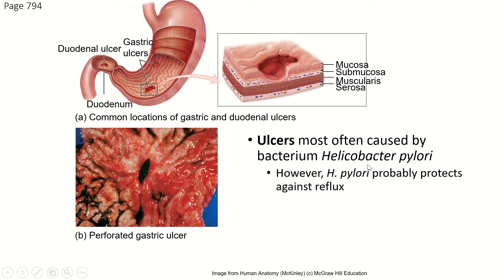People used to think ulcers were caused by excessive stomach acid, but in fact they are caused by a bacterium. Once doctors figured that out, they started treating everybody who had this bacterium. What they found was that people who had been treated to get rid of H. pylori started getting acid reflux. It looks like H. pylori actually protects against reflux. So if you have the bacterium and it's not causing ulcers, it's better to leave it in place — otherwise its presence is actually kind of protective.